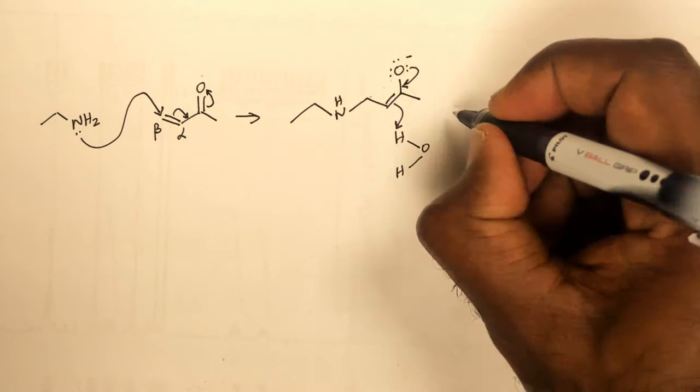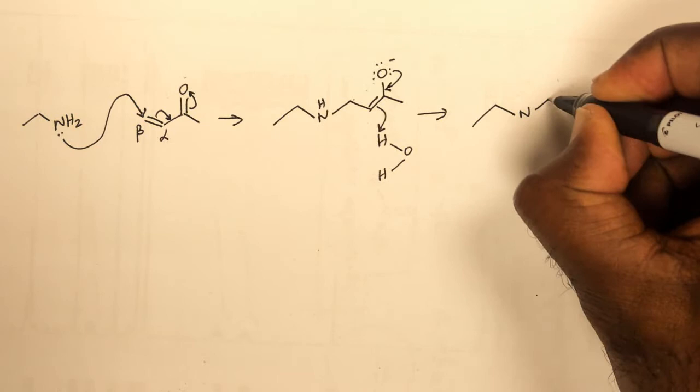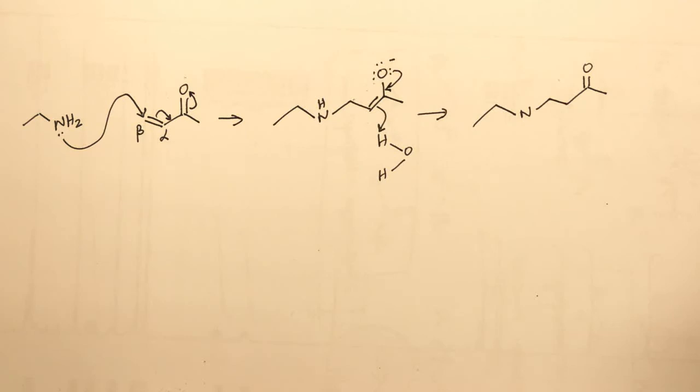Picking up a proton from a weak acid like water would be sufficient to protonate that particular carbon atom. And the result of that would be a ketone with an alpha-beta saturated group and a nucleophile.